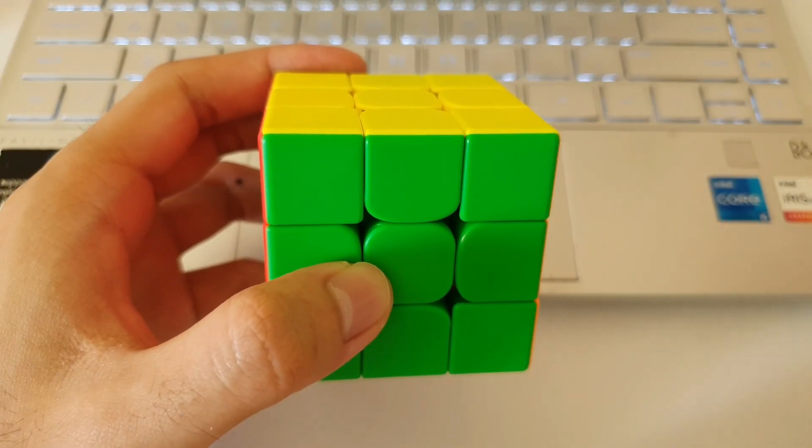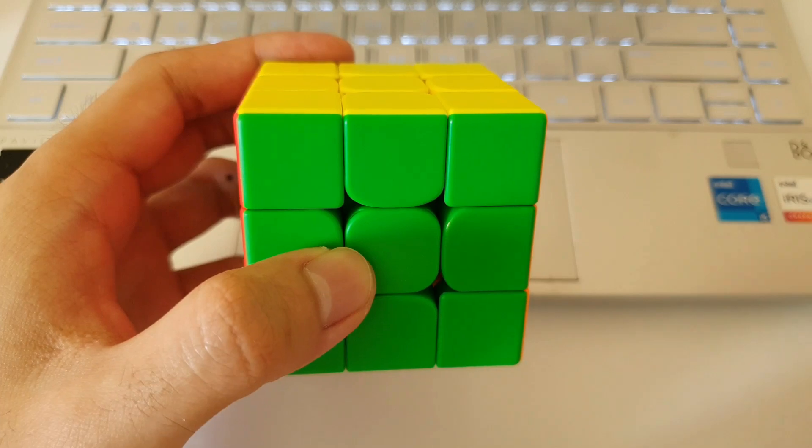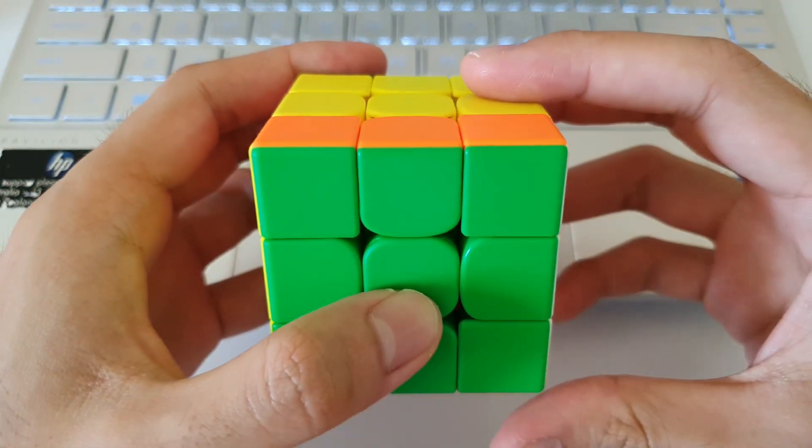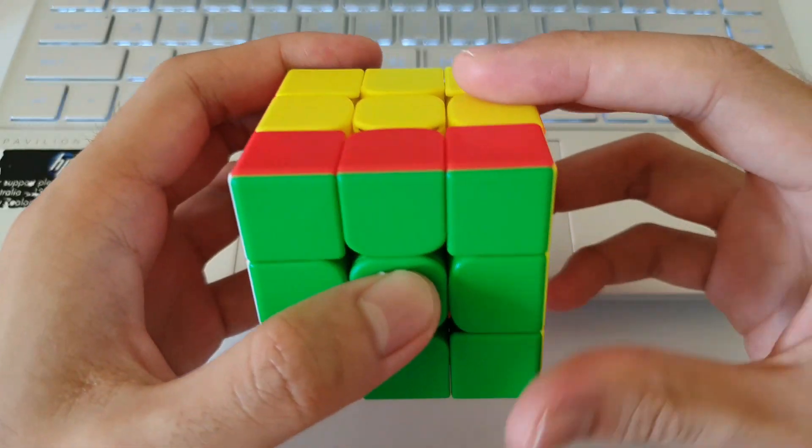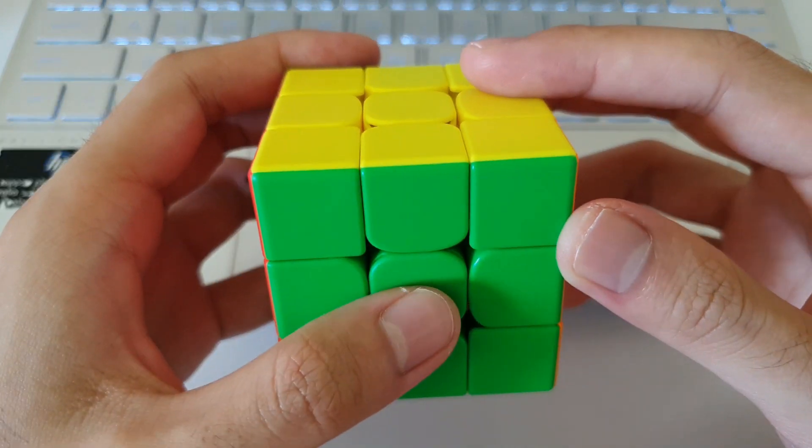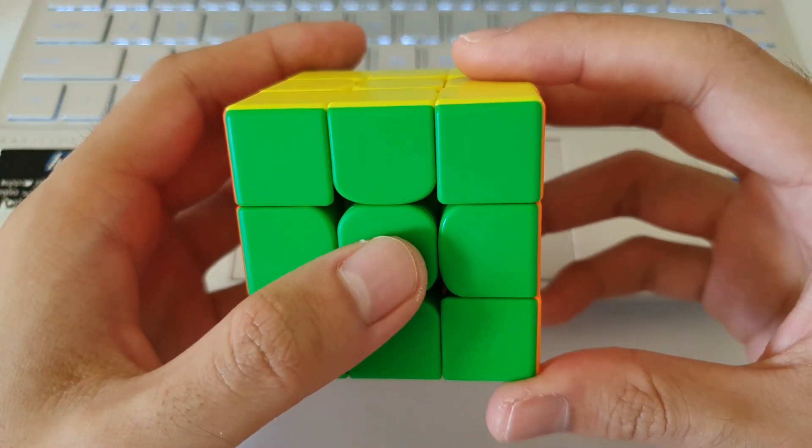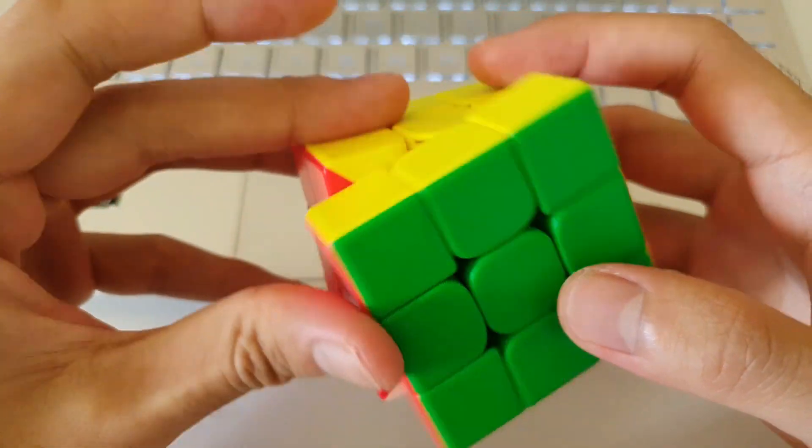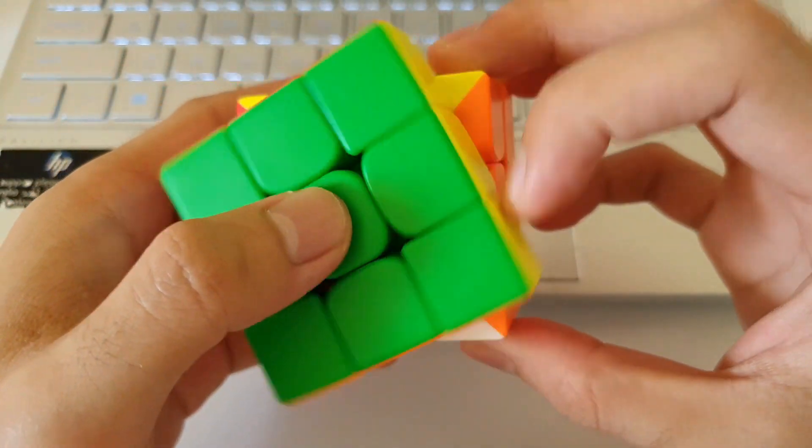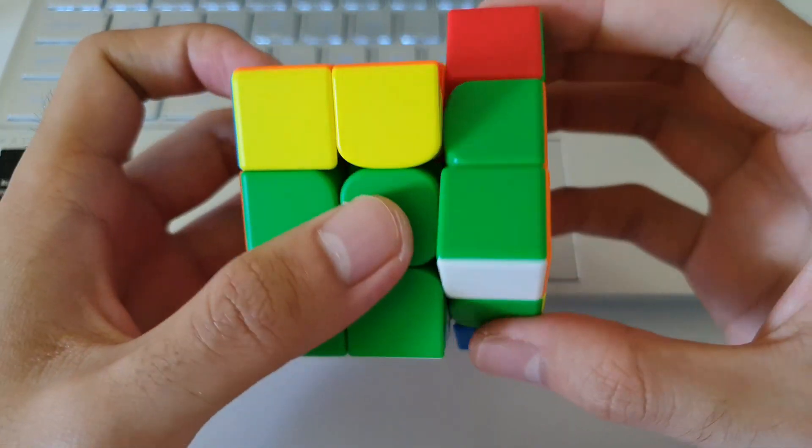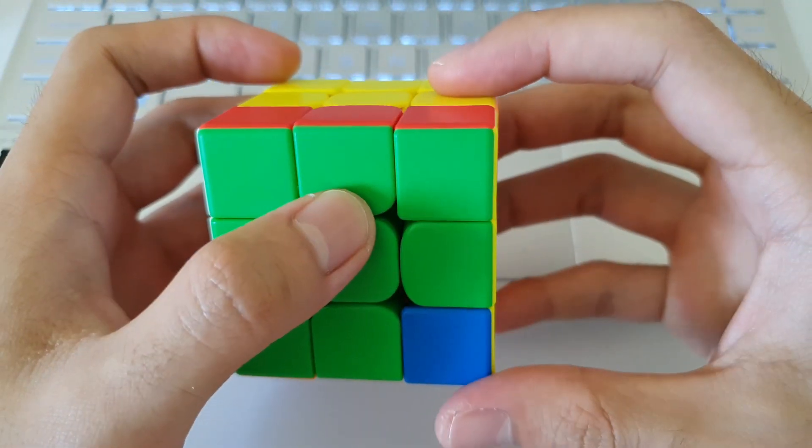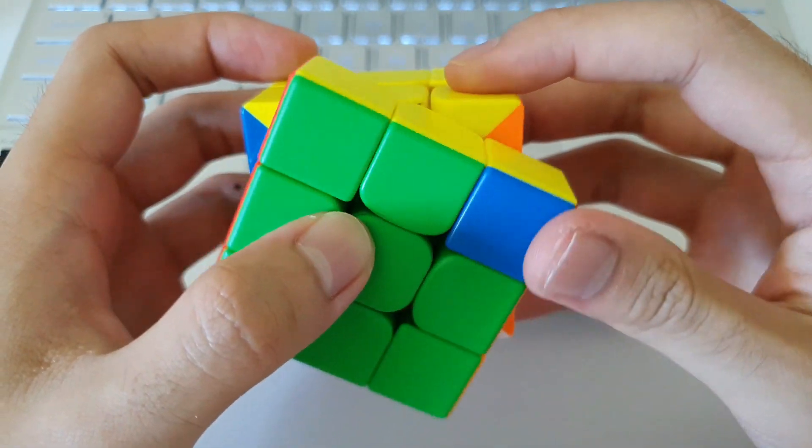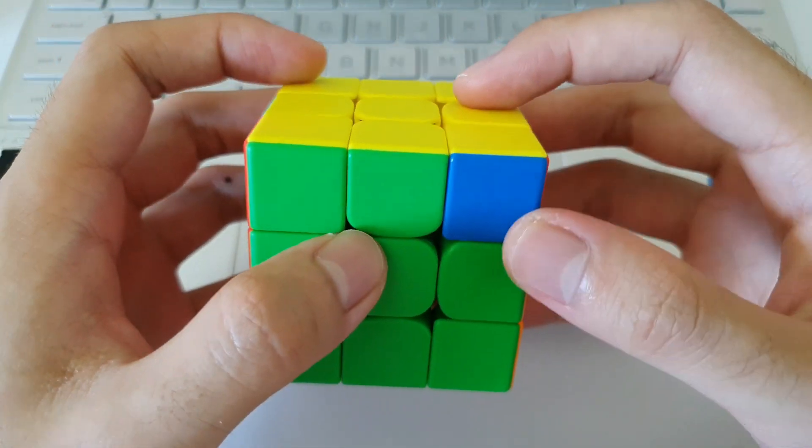So the main finger trick to be aware of in this algorithm is this F' push, which isn't actually used until the very last move of the algorithm. And the important thing about using this move, instead of doing it another way, such as using the index finger is, for example, I'll get to the end of the algorithm, you'll notice that if I do this F' move, I don't have to re-grip like this if I use my thumb.